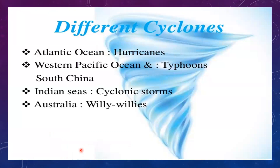Cyclones are named differently in different oceans. In the Atlantic Ocean, they are called hurricanes. In the Western Pacific Ocean and South China Sea, they are called typhoons. In the Indian Ocean, they are called cyclonic storms. In Australia, these low pressure cyclone depressions are called willy-willies.